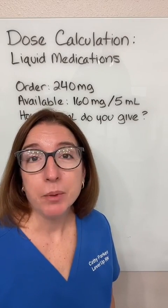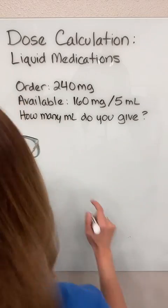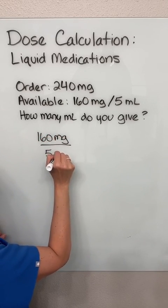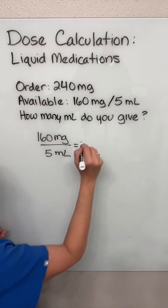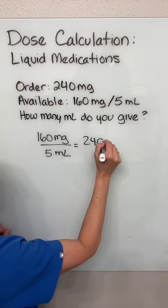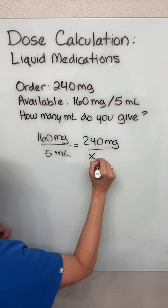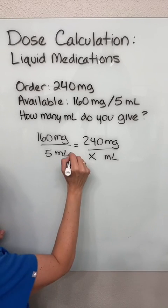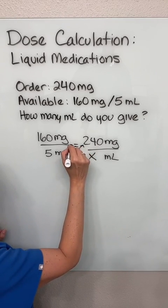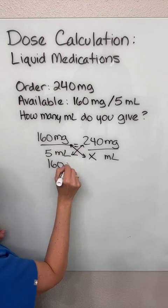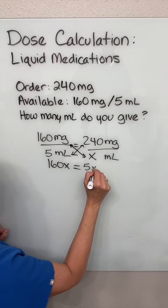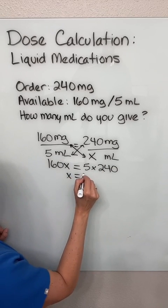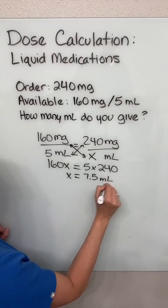Let's solve this same problem with ratio and proportion. On one side of the equation, I'm going to put my known ratio, which is the drug concentration. On the other side of the equation, I'm going to put my ordered dose, and I'm going to put an x for the unknown value, which is how many milliliters we want to administer. Then I would cross multiply: 160 times x equals 5 times 240. And if we solve for x, we will end up with 7.5 — so that's how many milliliters we need to administer.